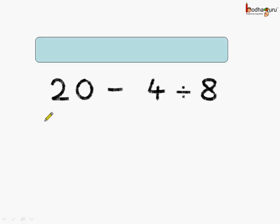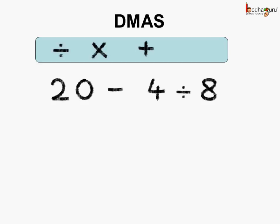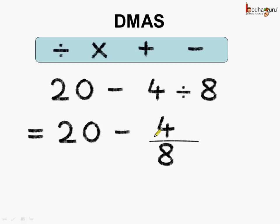Here is the expression: 20 minus 4 divided by 8. Now, if we solve it according to DMAS rule, then first we need to do division, followed by multiplication, then addition, and lastly subtraction. So, here we need to do division first. This becomes 20 minus 4 divided by 8, and 4 divided by 8 can be reduced. 4 ones are 4, 4 twos are 8. So, this expression becomes 20 minus 1 divided by 2.